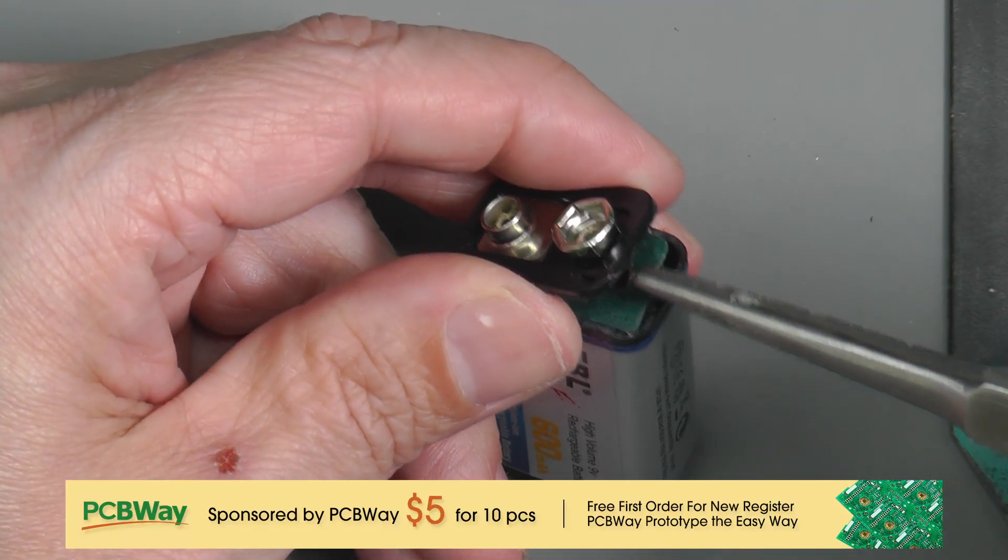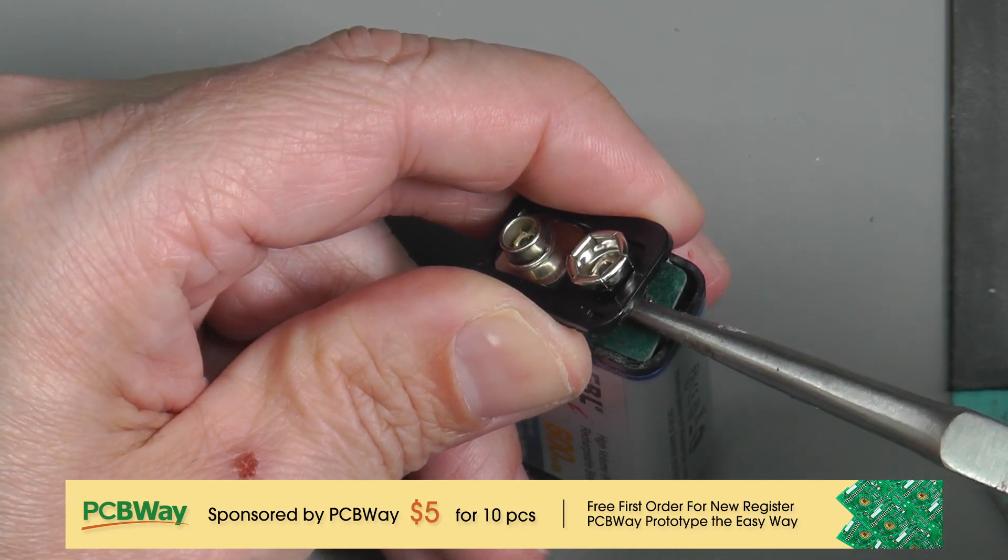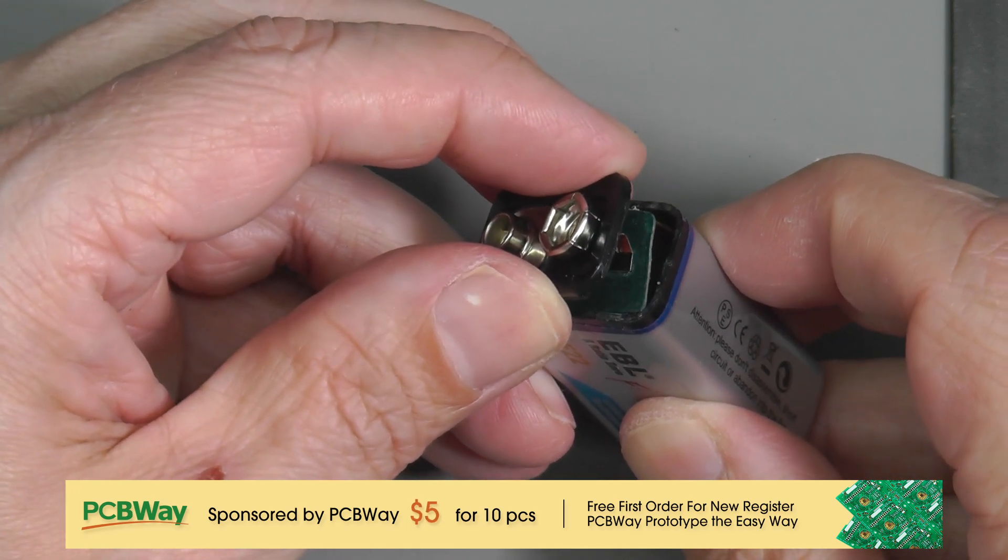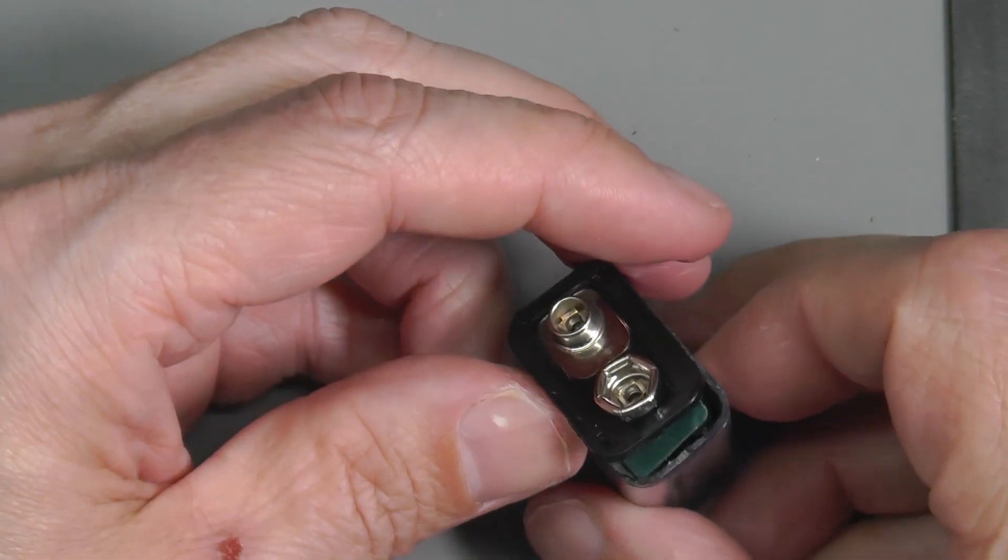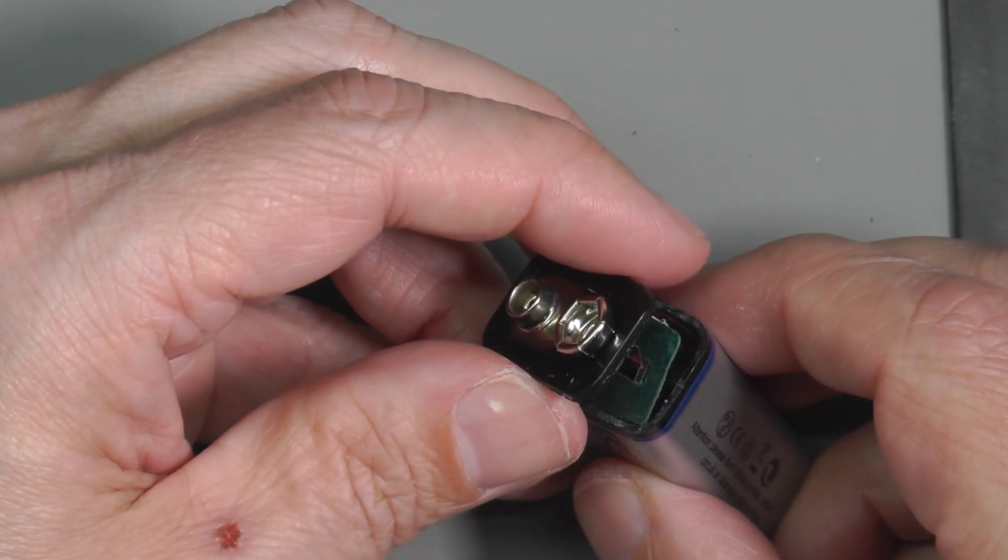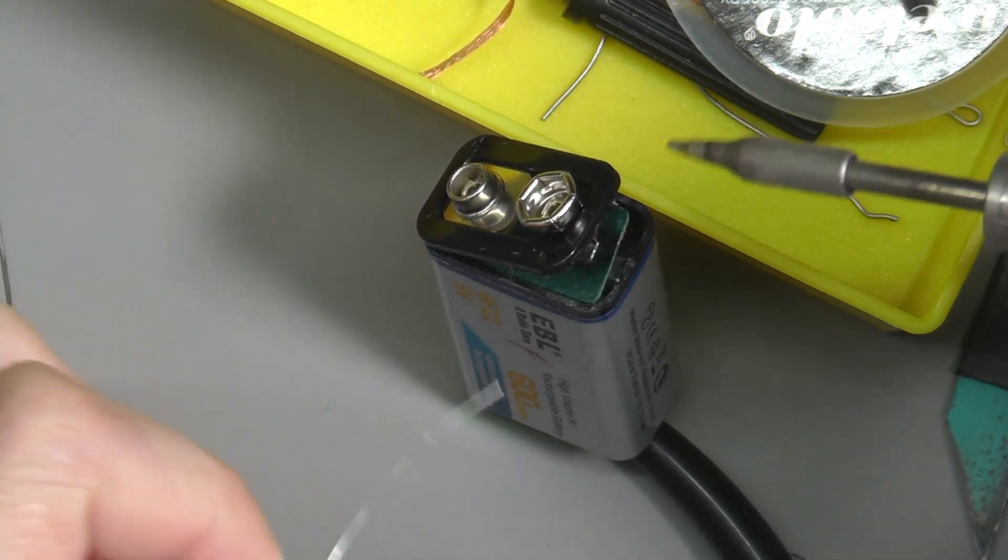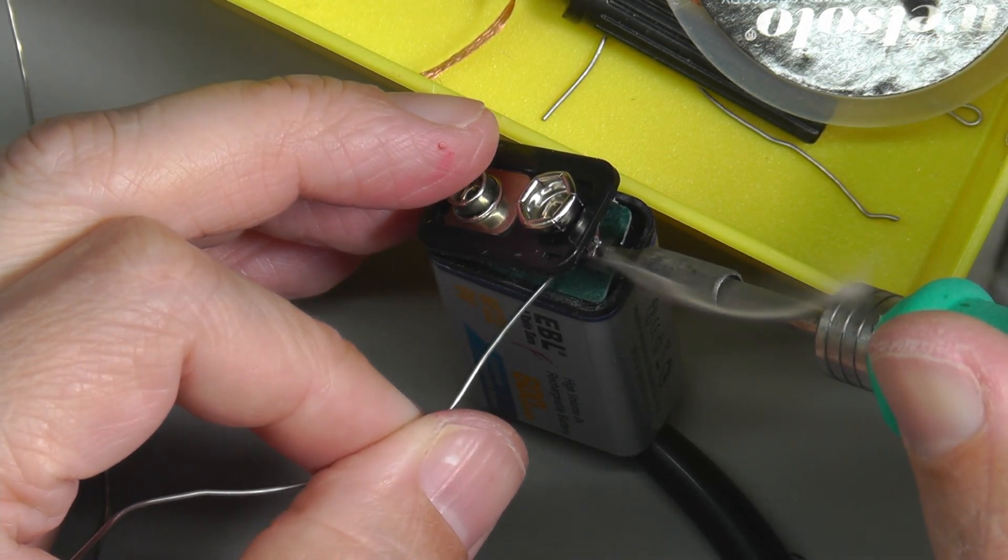So I'm just going to bend the contact slightly so it appears nice and flat. Yeah, I think that'll do. I'll tin that board and the contact and solder it up. I've got the battery balanced so that I can let you see it on camera as well. That's it tinned.